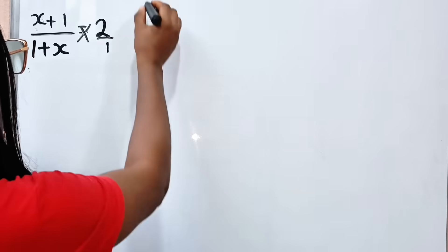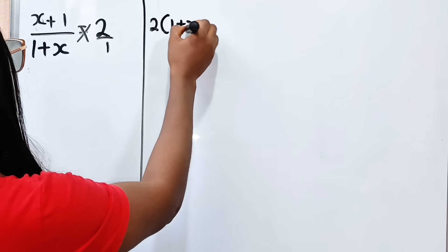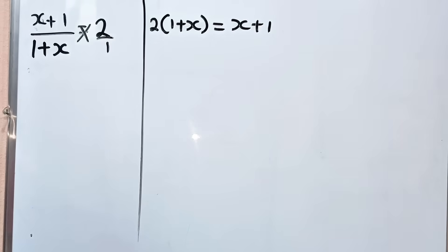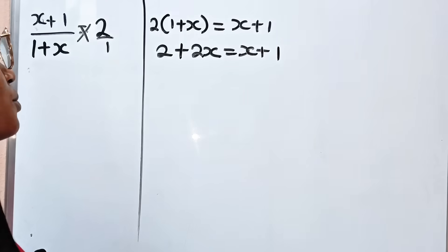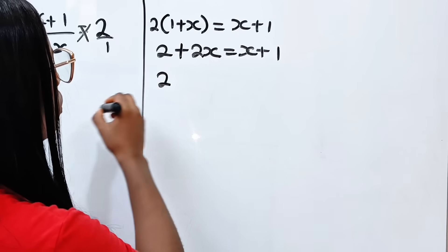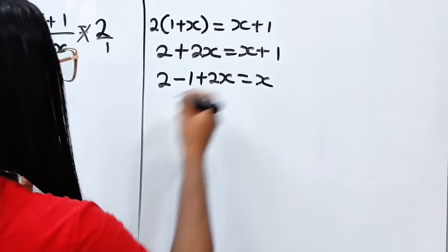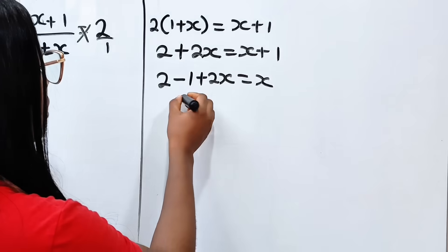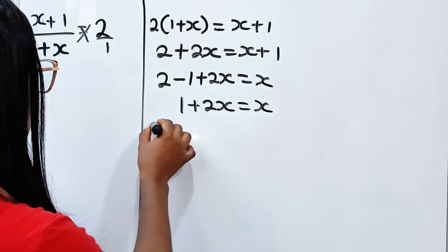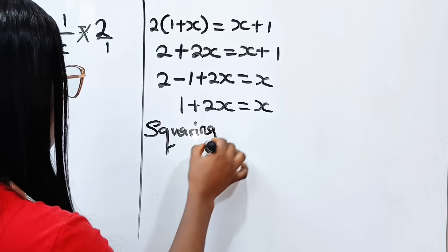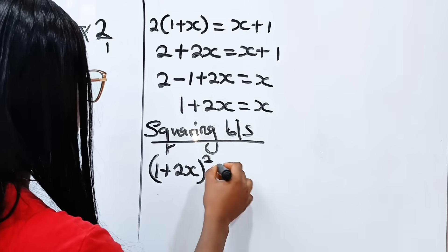Using another way — so if we cross multiply, we are going to have 2 times 1 plus x is equal to x plus 1. Now 2 times 1 is 2, and 2 times x is 2x, is equal to x plus 1. So we have 2 minus 1 plus 2x is equal to x. Now 2 minus 1 is 1, plus 2x is equal to x. Now let's square both sides of this equation. Squaring both sides, we have 1 plus 2x squared is equal to x squared.